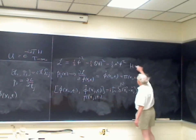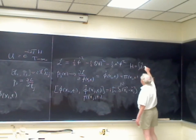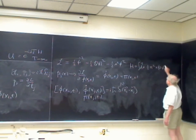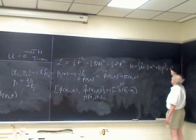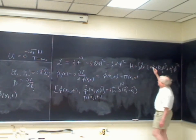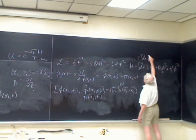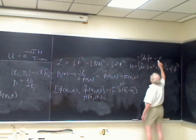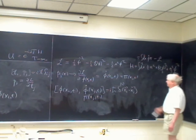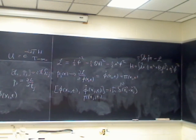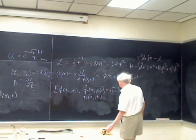You then construct the Hamiltonian in the usual way: H = ∫d³x of one-half π squared plus one-half (∇φ)² plus one-half μ²φ², using the identification π = φ̇ and the standard Legendre transform. That's the basic way in which one does field quantization.